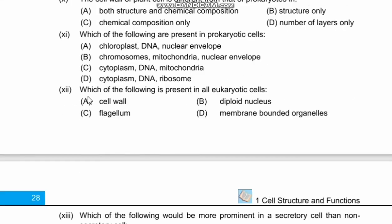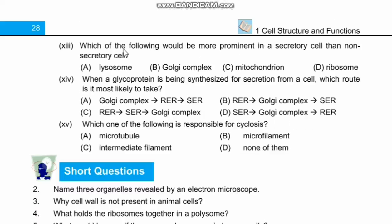Question 12: Which of the following is present in all eukaryotic cells? Options are cell wall, diploid nucleus, flagellum, and membrane-bound organelles. Membrane-bound organelles are present in all eukaryotic cells. Right option is D.